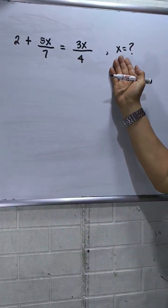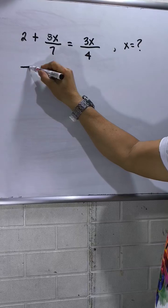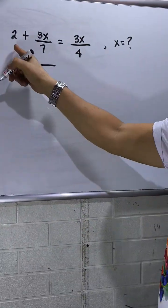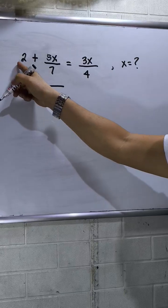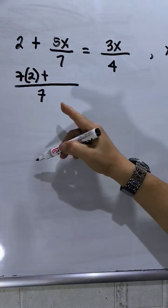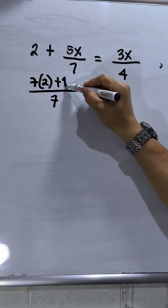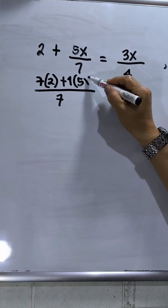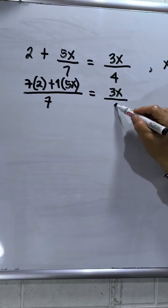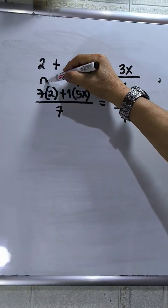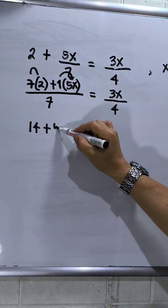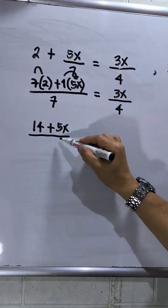Find the value of x. So I will find the LCD at the left side, of course 7. Then 7 divided by 1, there is one in here, that will be 7 times 2. Then plus 7 divided by 7, that is 1 times the numerator which is 5x. Then equals 3x over 4. Then multiply, so this will be 14 plus 1 times 5x, that will be 5x, then this will be over 7 equals 3x over 4.